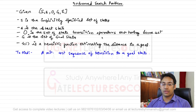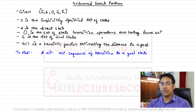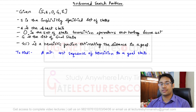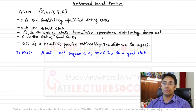In this video we'll be discussing the informed state space search. Previously we discussed uninformed state space search, where the state space is defined by four tuples: capital S, small s, capital O, and G. Capital S denotes the set of states, small s denotes the initial (start) state, G defines the set of goal states (there can be more than one), and O defines the set of operators.